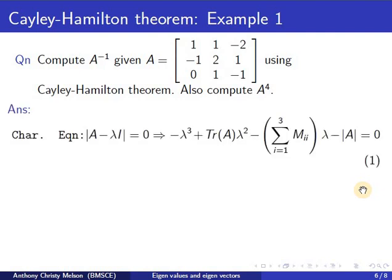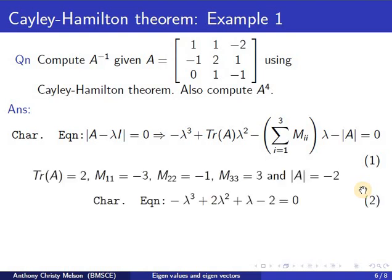Now for the matrix A given, the trace of the matrix is 2. The principal minors are minus 3, minus 1 and 3 and determinant is minus 2. So the characteristic equation would be given by equation 2.